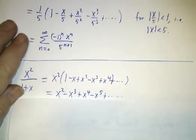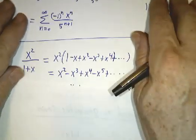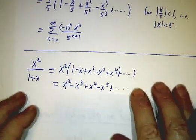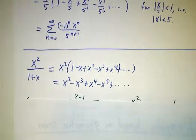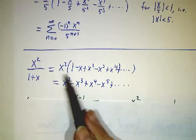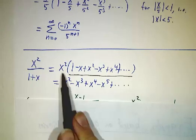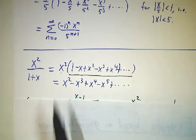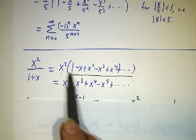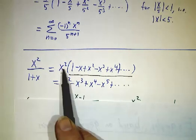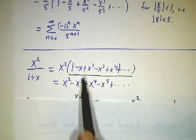Finally, you can deal with things where there's a numerator. How do you deal with x squared over 1 plus x? Well, you just take 1 over 1 plus x, and you multiply it by x squared. So x squared times 1 is x squared, x squared times x is x cubed, x squared times x squared is x to the fourth, and so on.